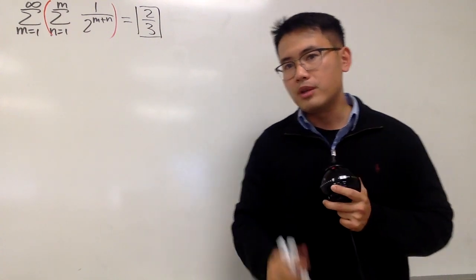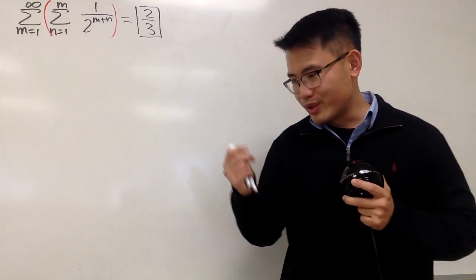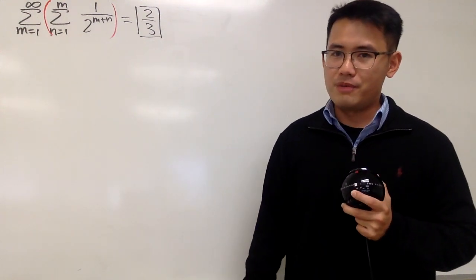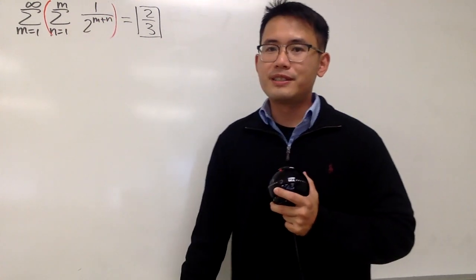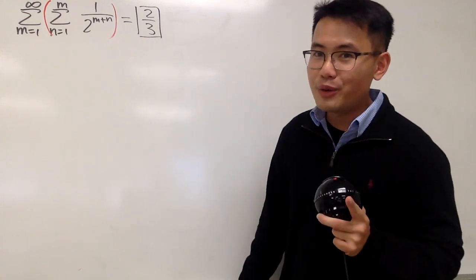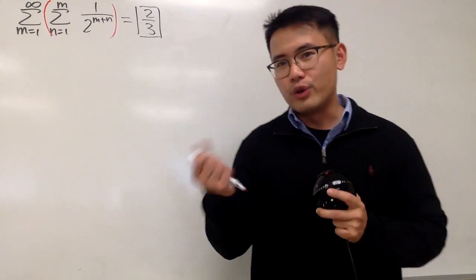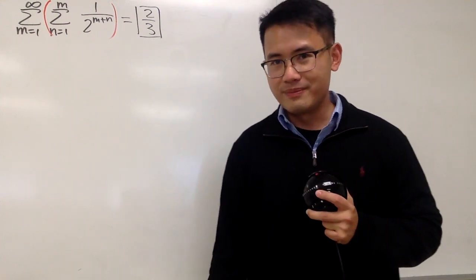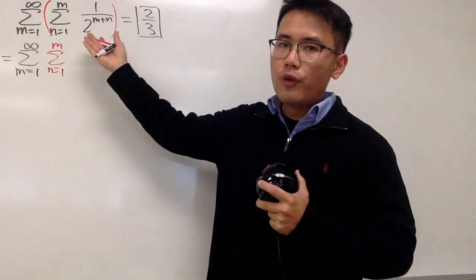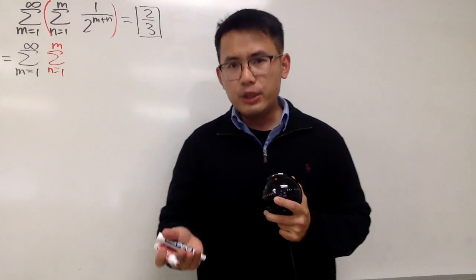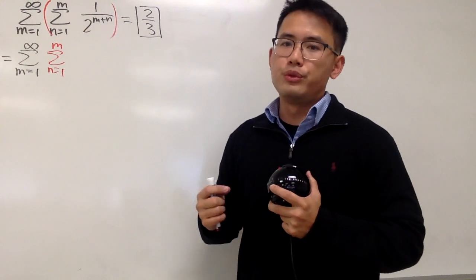You guys can leave a comment below and let me know if you just do this as it is, or if you change the order of the double summation. I think it's possible to do it inside out as it is, but I'd like to show you how to change the order — because it's really cool, just like changing the order of a double integral. For the 1 over 2 to the m plus n power, we can break it apart nicely: this is the same as 1 over 2 to the m times 2 to the n.